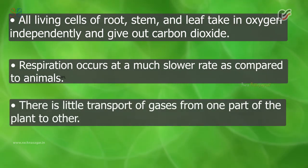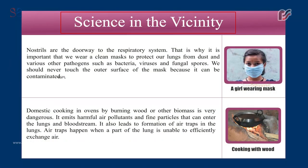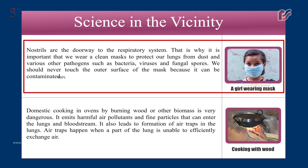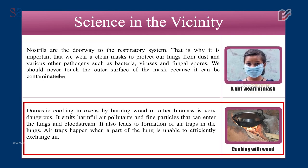Nostrils are the doorway to the respiratory system. It is important that we wear a clean mask to protect our lungs from dust and various pathogens such as bacteria, viruses, and fungal spores. We should never touch the outer surface of the mask because it can be contaminated. Domestic cooking in ovens by burning wood or other biomass is very dangerous — it emits harmful air pollutants and fine particles that can enter the lungs and bloodstream, and leads to formation of air traps in the lungs, which happen when a part of the lung is unable to efficiently exchange air.